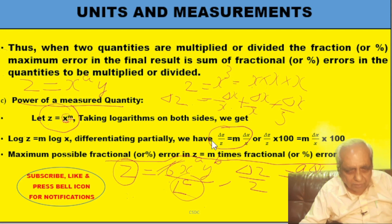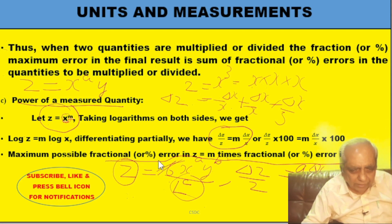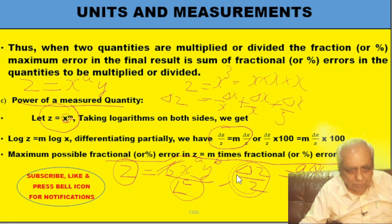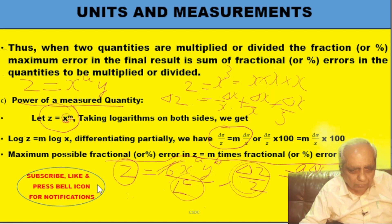To summarize: when quantities are added or subtracted, the maximum absolute error in the final result equals the sum of the maximum errors in each quantity. When quantities are multiplied or divided, the fractional or percentage error in the final result equals the sum of the fractional errors in each quantity. When a quantity is raised to a power, that index multiplies the fractional error in the base variable. The permissible error in z is a·(δx/x) + b·(δy/y) + c·(δl/l). Next time we will do numericals on this.